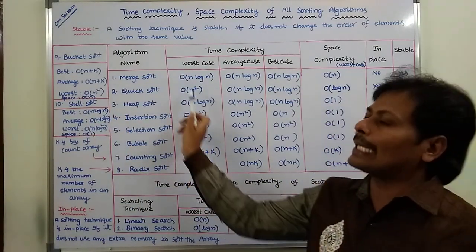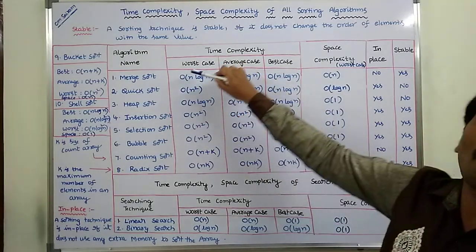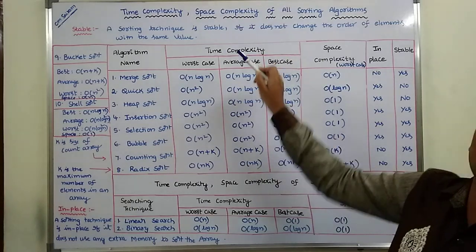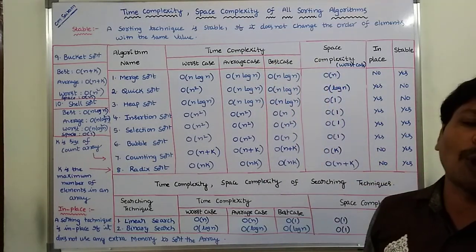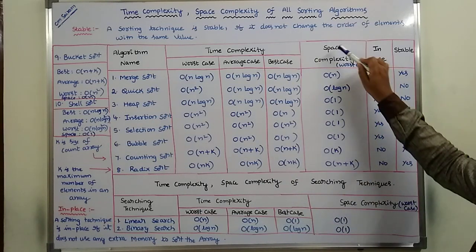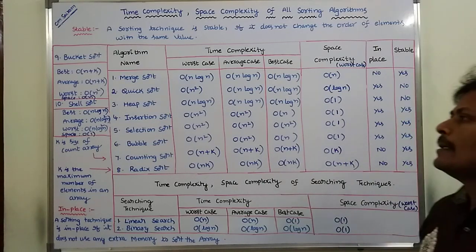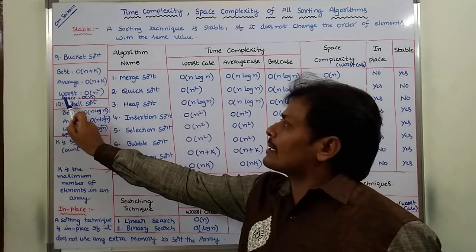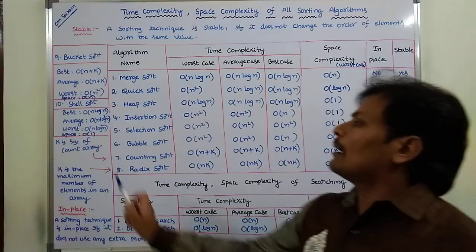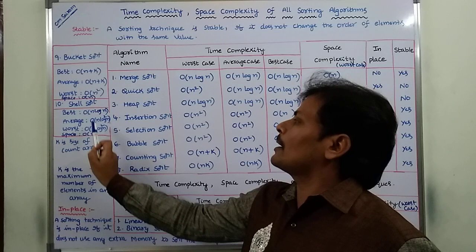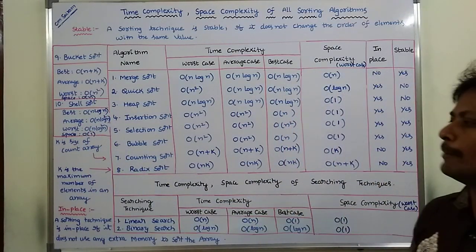For these 10 Sorting Algorithms, this is the Worst Case Time Complexity, this is the Average Case Time Complexity, and this is the Best Case Time Complexity. Now this is the Space Complexity in Worst Case. The Space Complexity of Bucket Sort is Big O of N, and the Space Complexity of Shell Sort in Worst Case is Big O of 1.